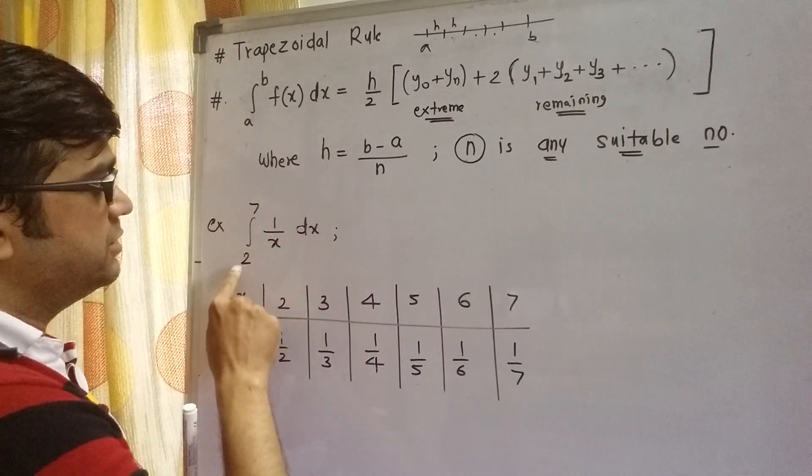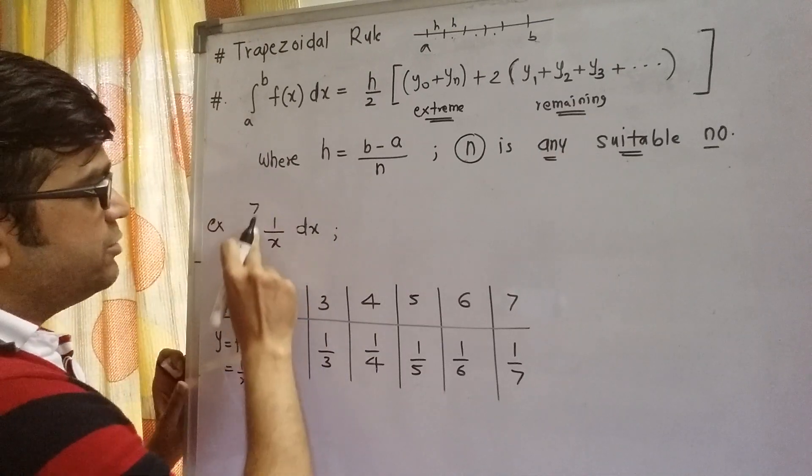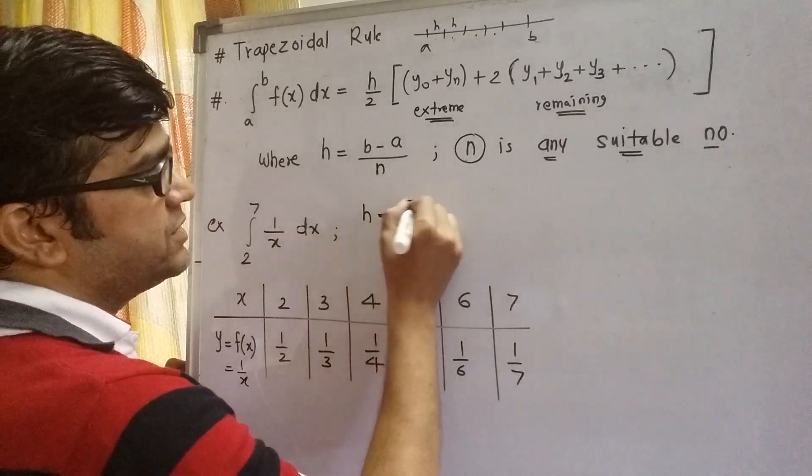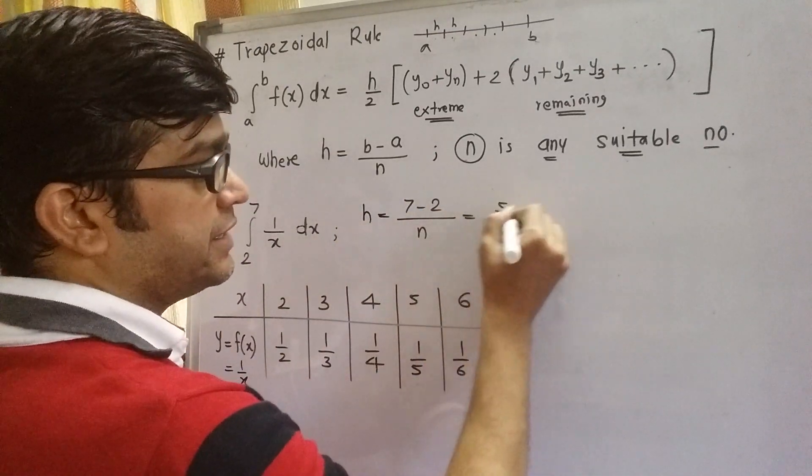Look at this question: integral 2 to 7, 1 by x dx. Your b value is 7, a value is 2. So what will be h? It will be 7 minus 2 divided by n. So it is going to be 5 by n.